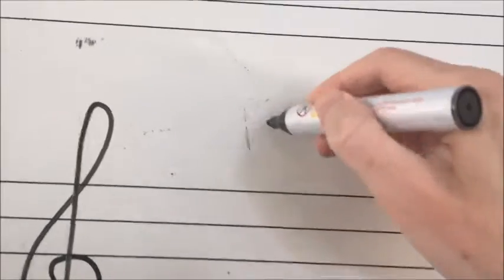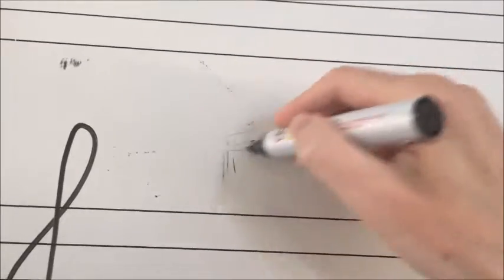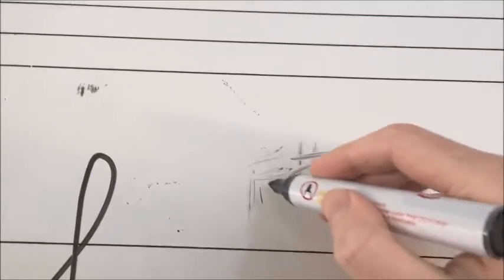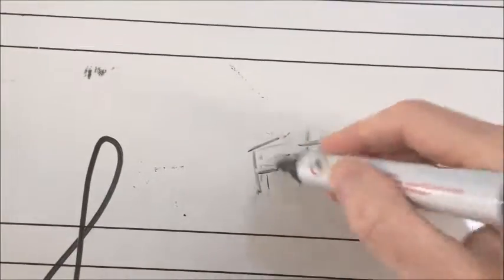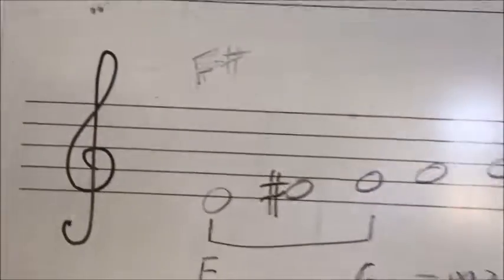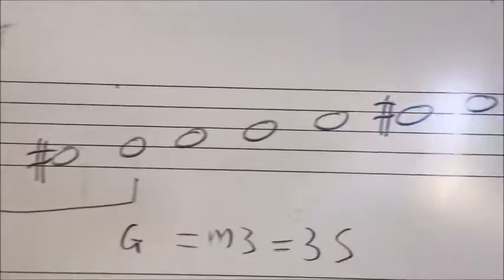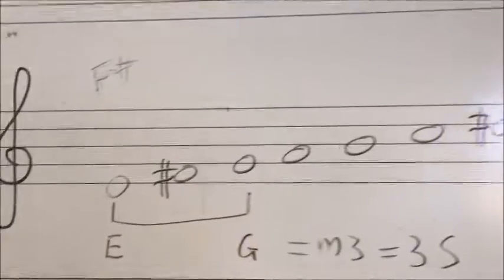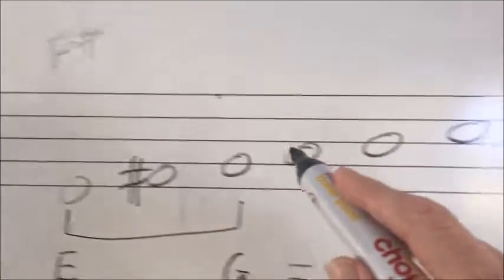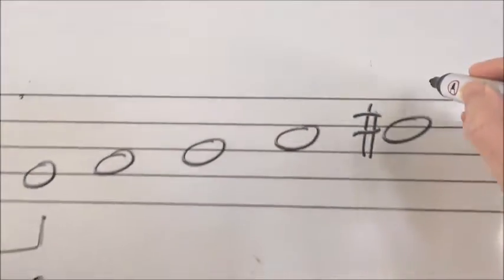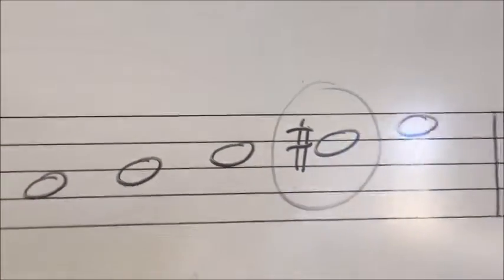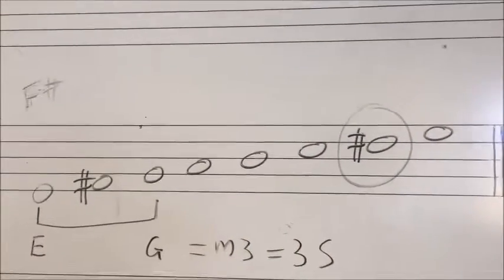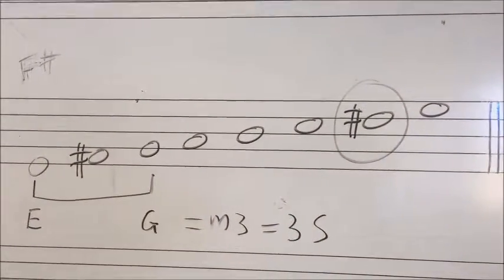So we're expecting just one sharp, F sharp. And we've got one sharp. We've got another one. So we're expecting just a normal D, but instead this note here, I'm going to circle it because it's standing out, it is a semitone higher than what we were expecting.